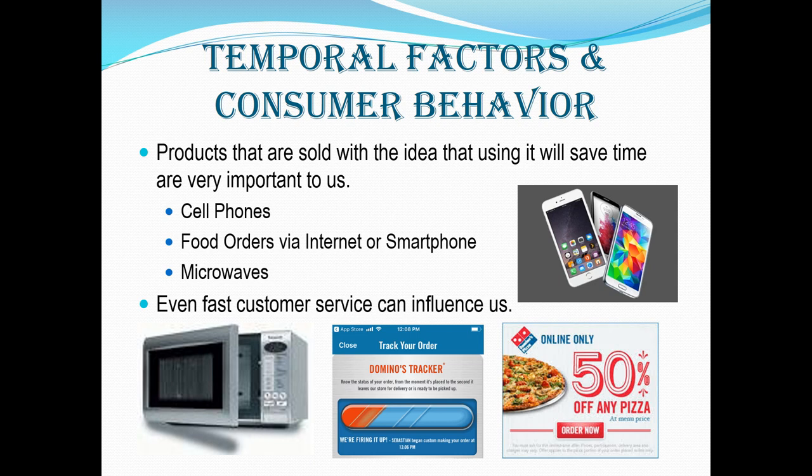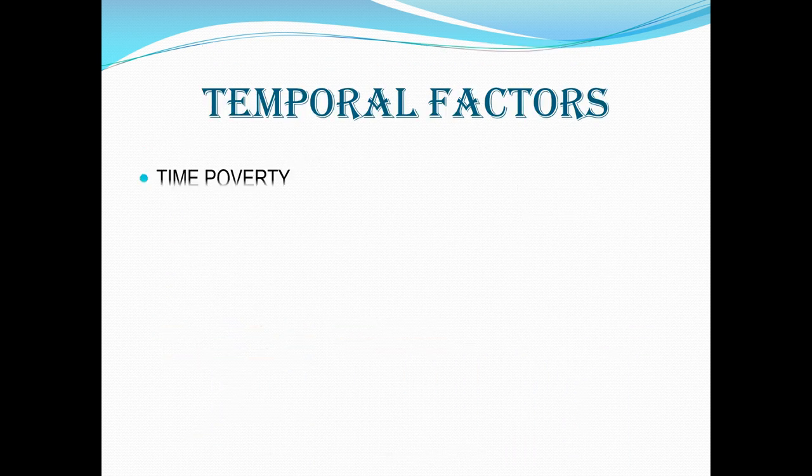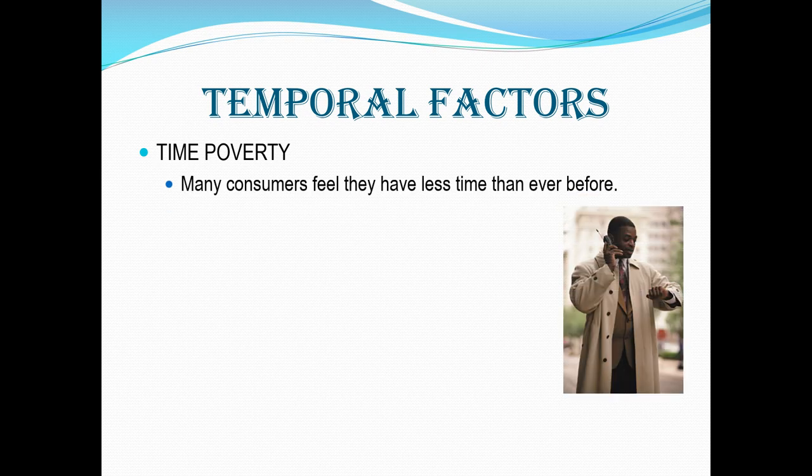The Domino's Tracker is an example of this — it tells you how your product is progressing. You purchase a pizza and it tells you: has it been made, is it en route, has it made it to your door? That's the use of technology to keep you informed. Temporal factors are very important, and one of the reasons is because we as a people seem to believe that we have less time than ever before. This is what we call time poverty.